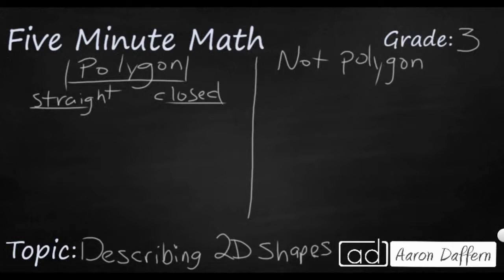Triangles are polygons because they have three straight sides and they're all closed. But if I were to draw a triangle kind of like the musical instrument and leave a little gap there, then that is not going to be a polygon simply because it's open.